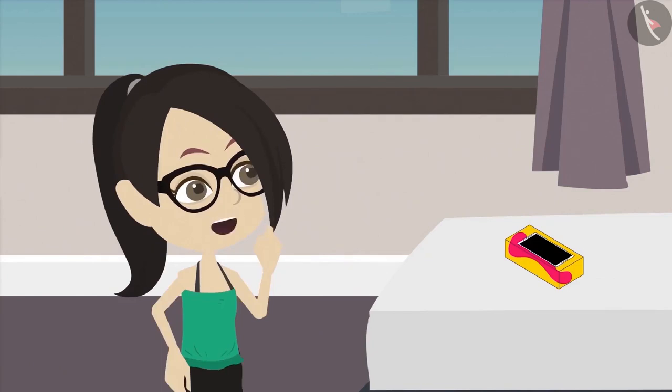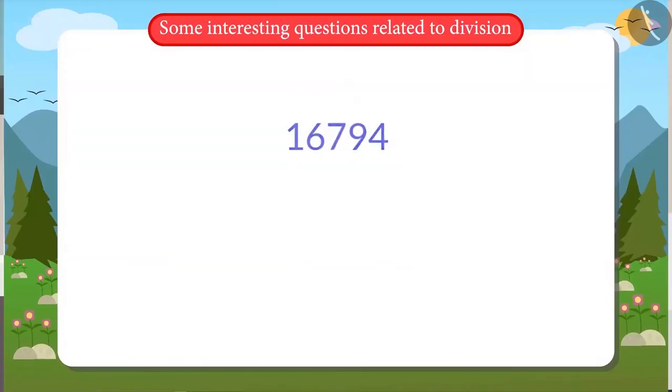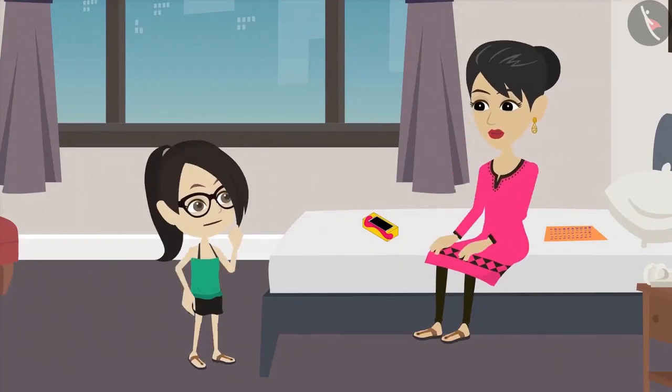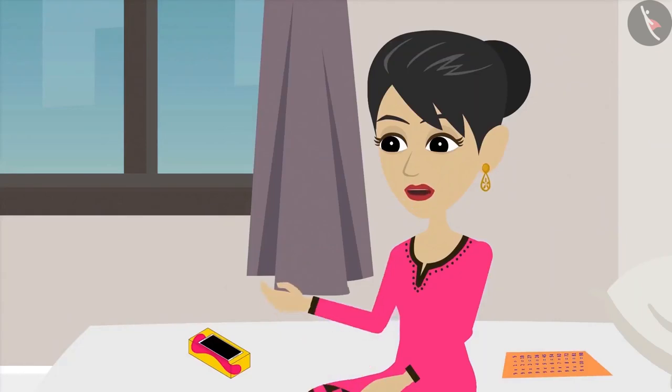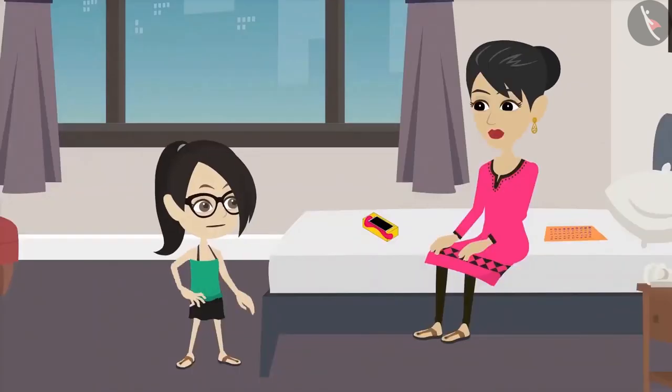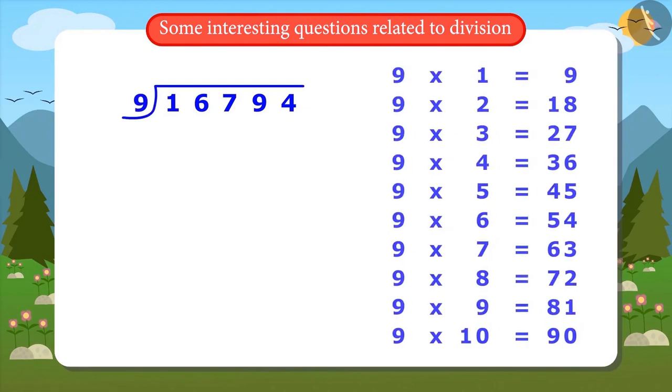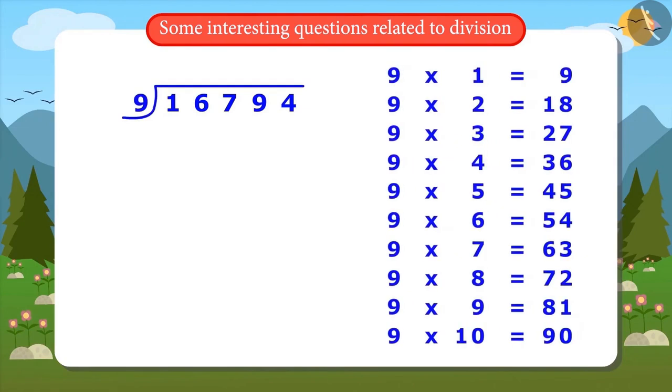This means to find out how much money to pay every month, you have to divide 16,794 by 9. Perfect Vandana. I can easily tell you the answer to this, mum. Okay then, tell me. I will write 16,794 and 9 in this way to divide this.